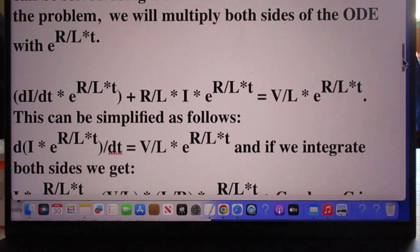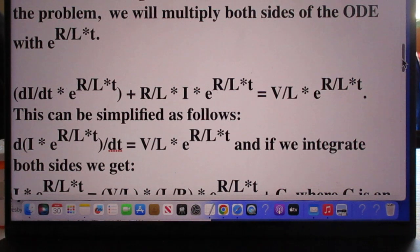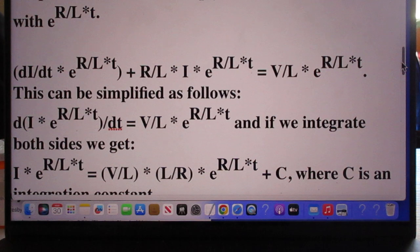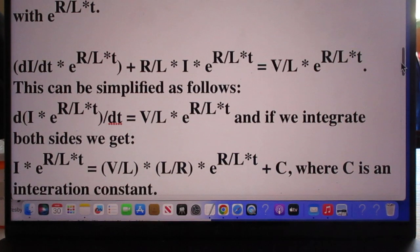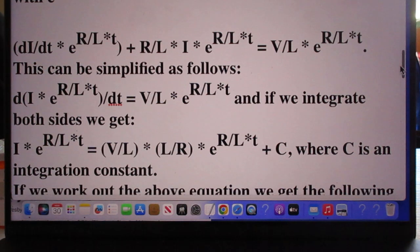So both sides will be multiplied with e to the power R divided by L times t. And so you see the result here.